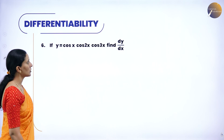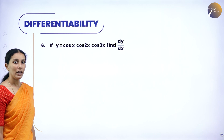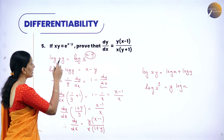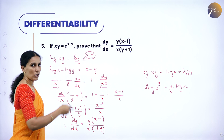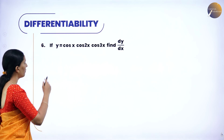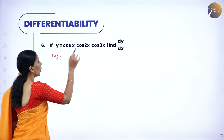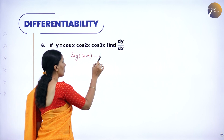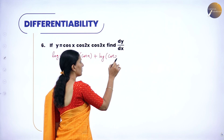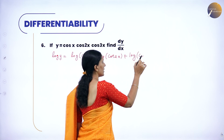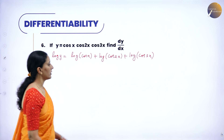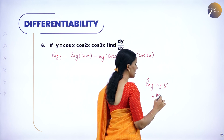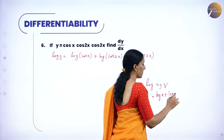Next function: if y equals cos x · cos 2x · cos 3x, find dy by dx. Apply log on both sides. When you have multiple functions, log helps you differentiate separately. Log y equals log cos x plus log cos 2x plus log cos 3x, because log of a product xyz can be written as log x plus log y plus log z.